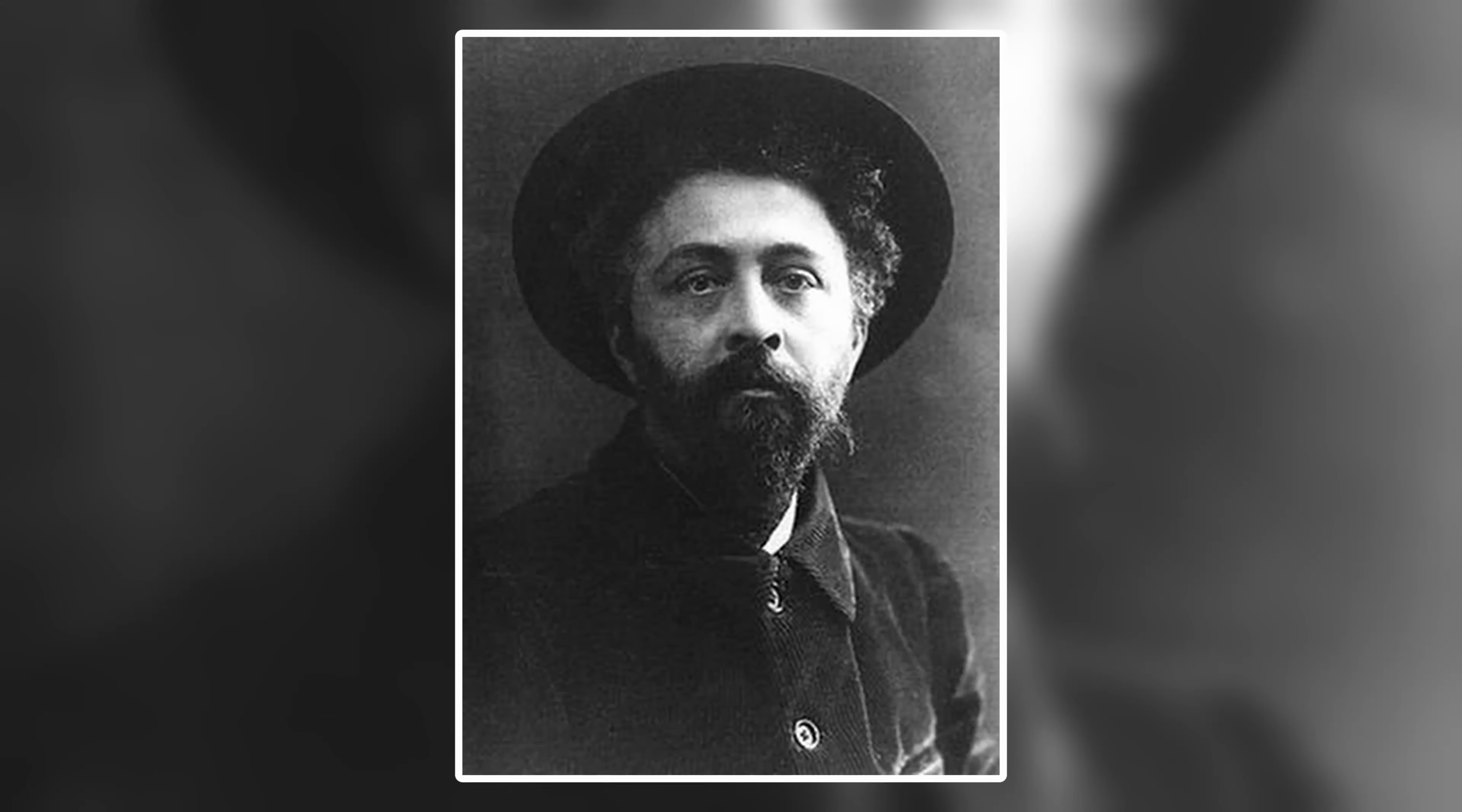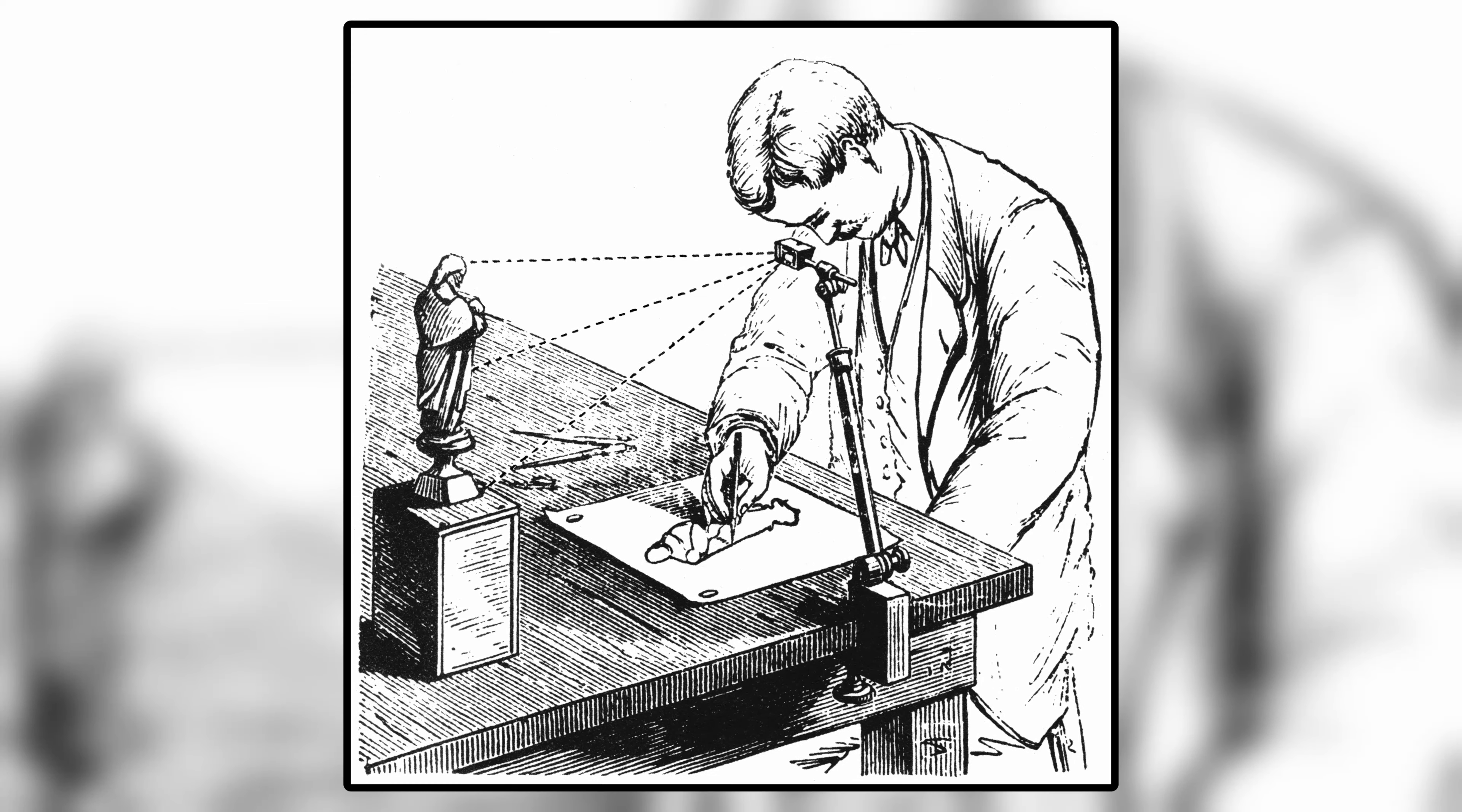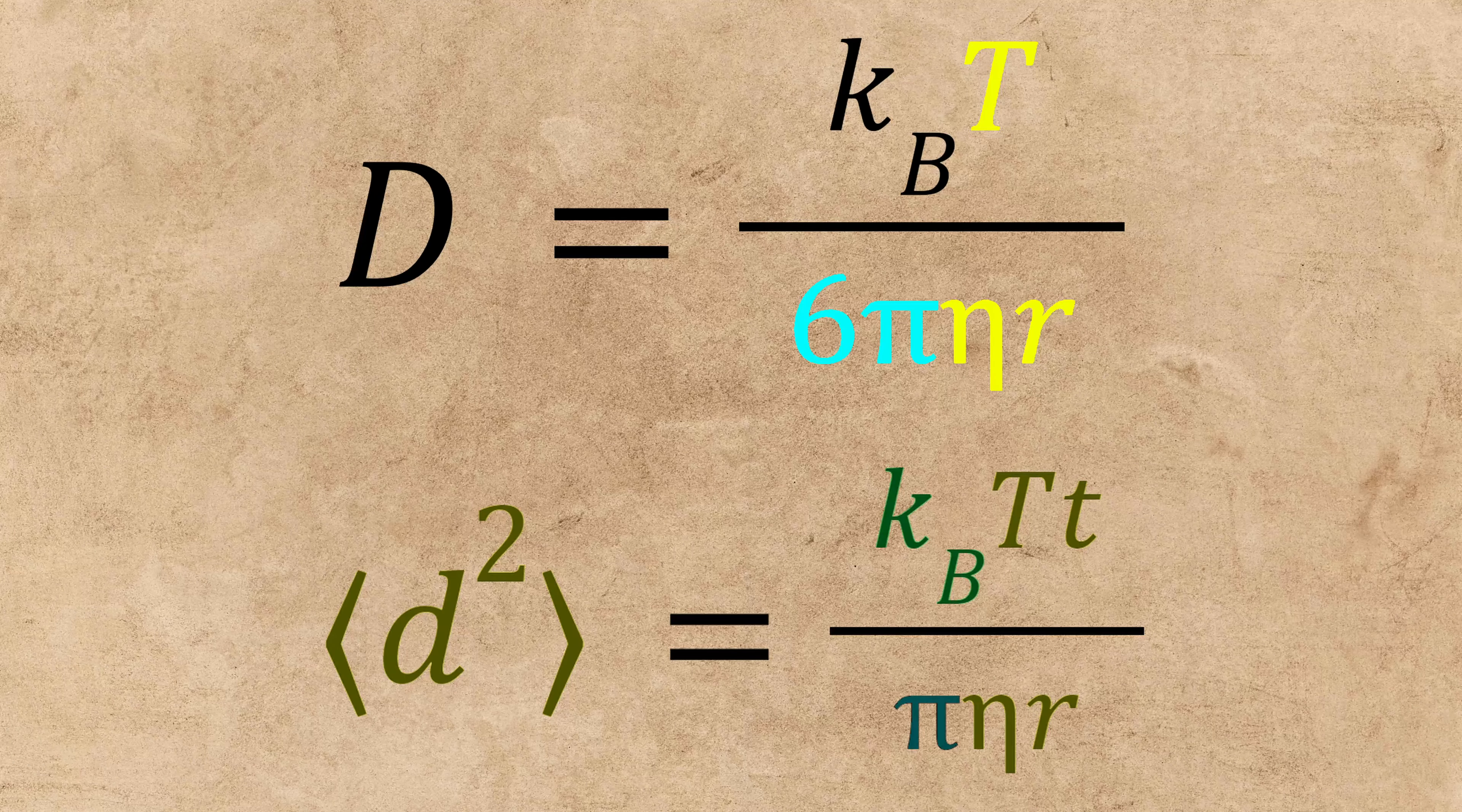Perrin, along with Joseph Chaudesaigues, who worked in Perrin's lab, experimentally calculated mean-squared displacements for suspended particles of gamboge and mastic. Using a primitive projector called a camera lucida, they traced the paths of about 200 singular grains. Then, using known values for viscosity, temperature, and radius of each particle, Perrin solved the mean-squared displacement relation, formulated by Sutherland and Einstein, and measured the value of the Boltzmann constant.